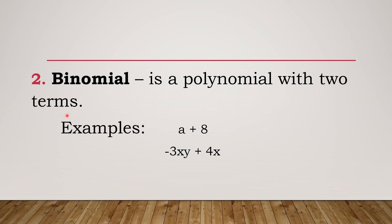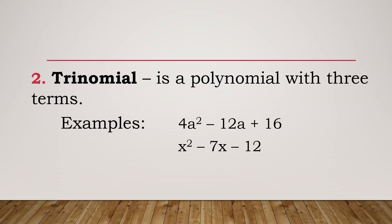The next type is a binomial — a polynomial with two terms. For example, a + 8 has two terms: a and 8. Also, -3xy + 4x is a binomial where the first term is -3xy and the second term is 4x. The plus or minus sign determines how many terms a polynomial has.